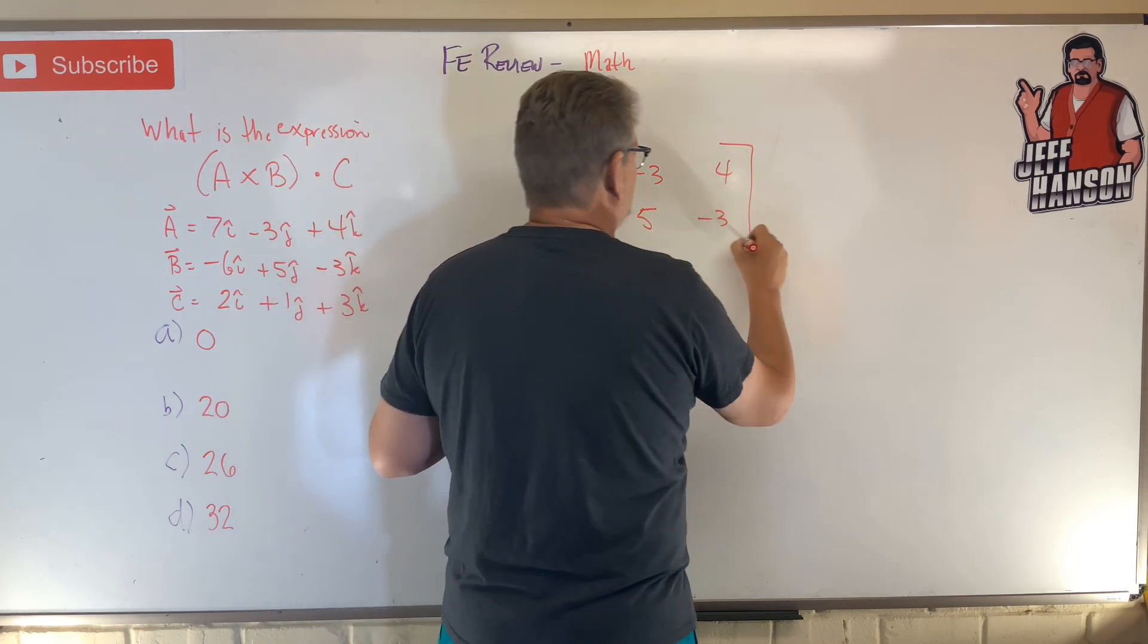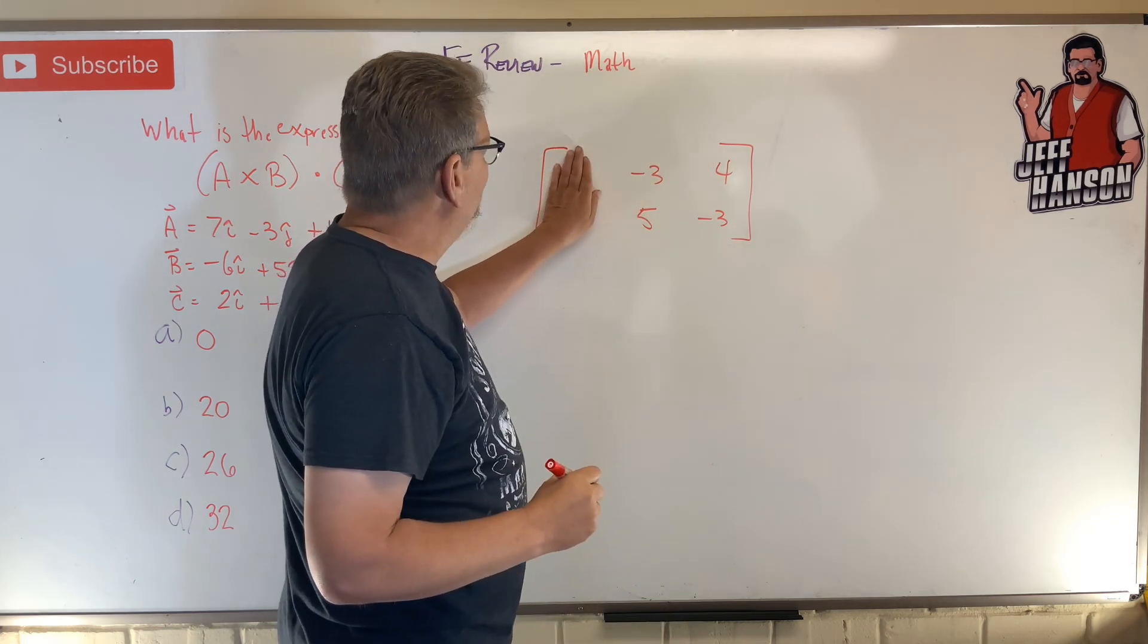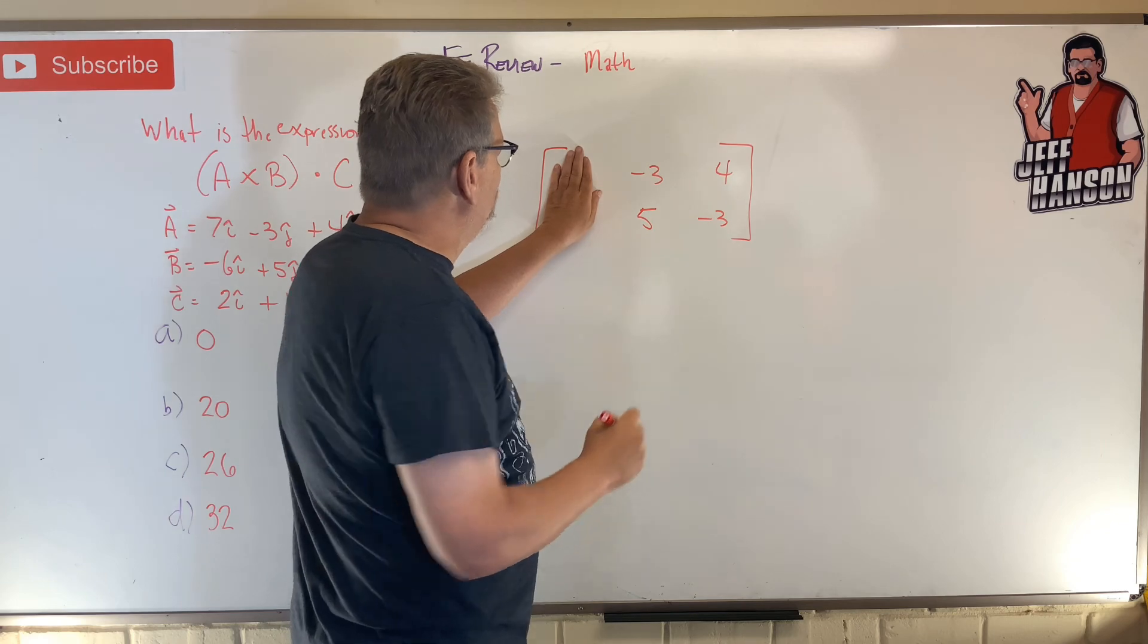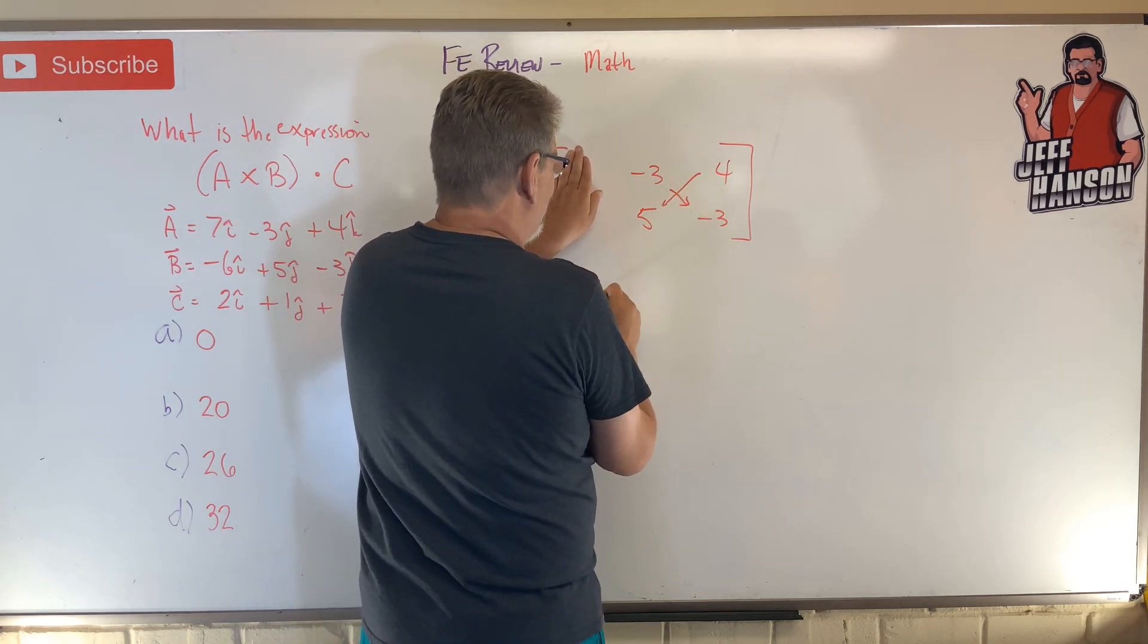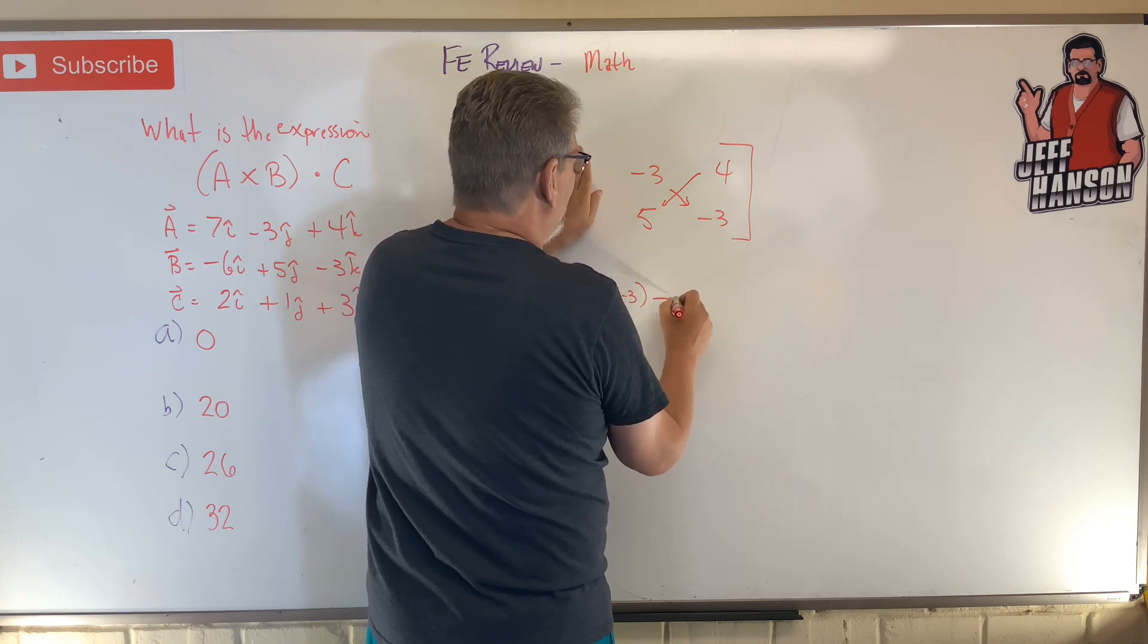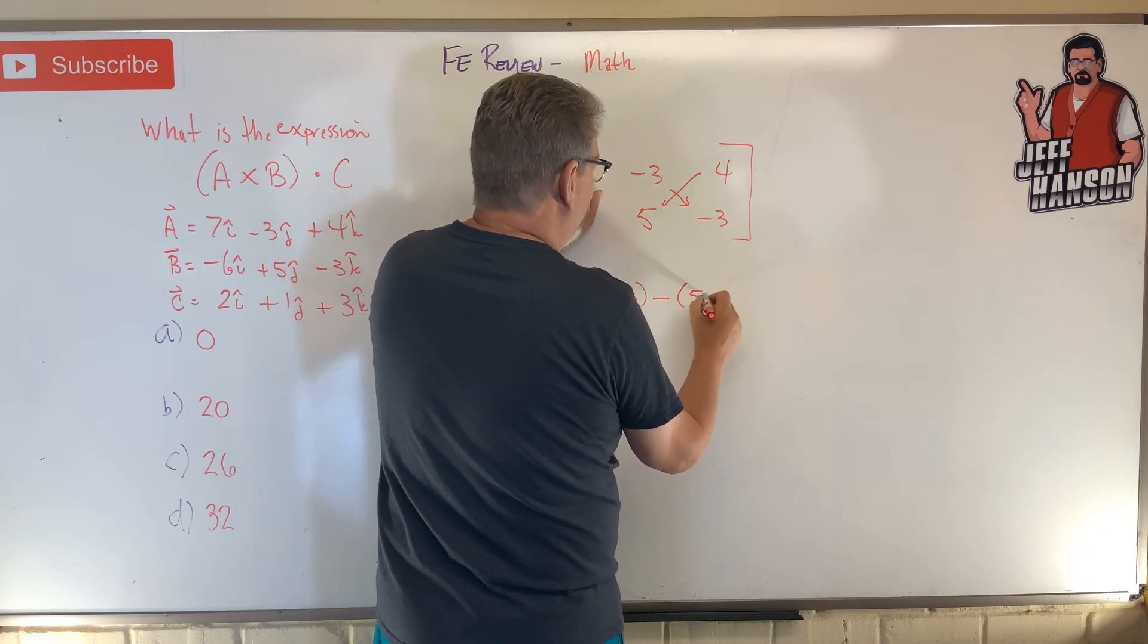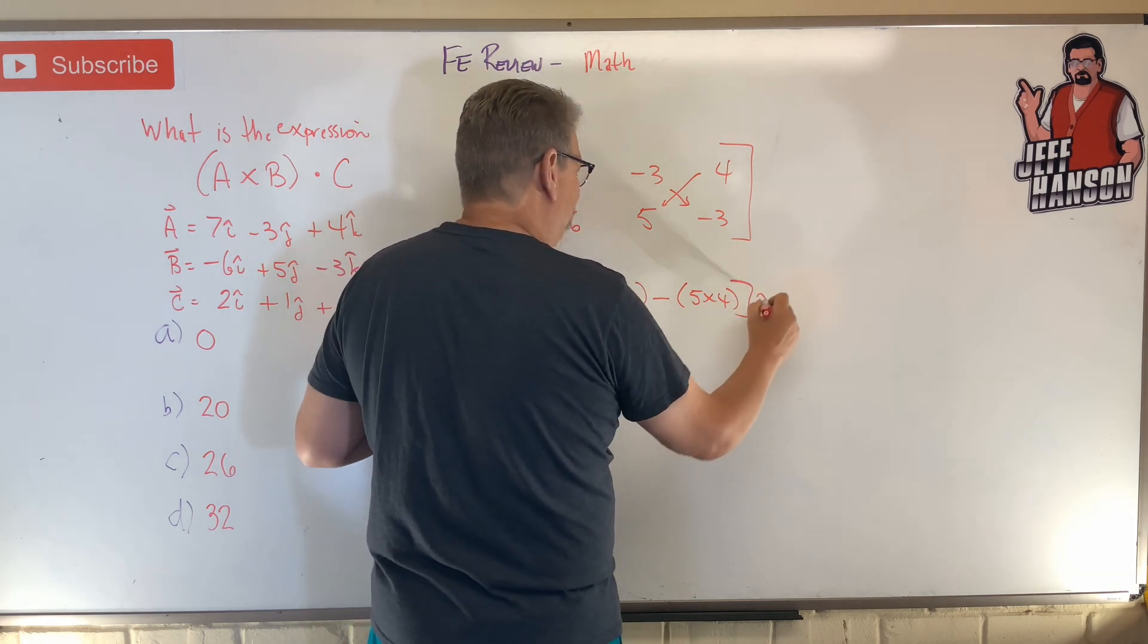So we're going to cross those two things together. If you remember how to do this, first one is the I hat. You cover that up and then you cross here. There and there. So minus three times minus three, lots of parentheses, minus five times four. And there is my I hat.